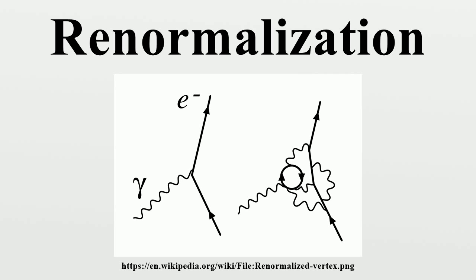The problem of infinities first arose in the classical electrodynamics of point particles in the 19th and early 20th century. The mass of a charged particle should include the mass energy in its electrostatic field. Assuming the particle is a charged spherical shell of radius r, the mass energy in the field becomes infinite as r→0. This implies that the point particle would have infinite inertia, making it unable to be accelerated. The value of r_e that makes this equal to the electron mass is called the classical electron radius, related to the fine structure constant and the Compton wavelength of the electron. The total effective mass of a spherical charged particle includes the actual bare mass of the spherical shell, and if the shell's bare mass is allowed to be negative, it might be possible to take a consistent point limit.